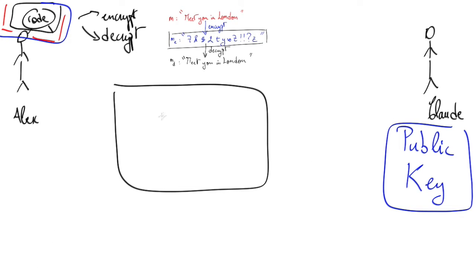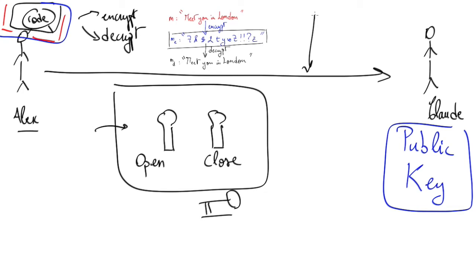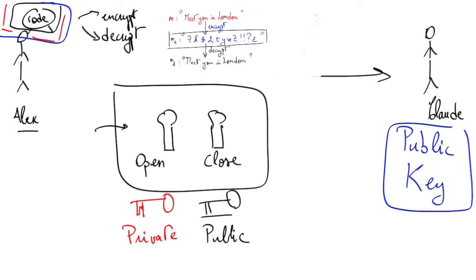This might not look intuitive, but you can understand it this way: imagine a box with one key that is only able to close it, and another key that is only able to open it. Public key encryption is just like putting this kind of box in the public domain and giving people the key to close your box, without giving them the key to open it. When Alex wants to send a message to Claude, he puts the letter inside the box and uses the public key to close it. If someone intercepts the box, they won't be able to open it — only Claude possesses the private key.